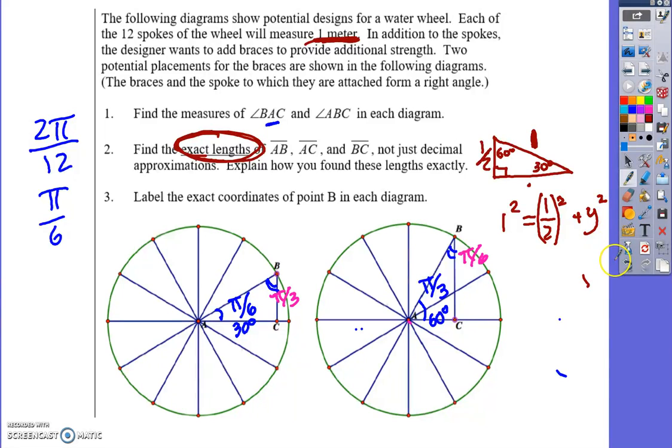One squared equals one half squared plus the missing side that I don't know - I'll call it y. So I end up with one minus one fourth equals y squared, because one half squared is one fourth. One minus one fourth is three fourths.